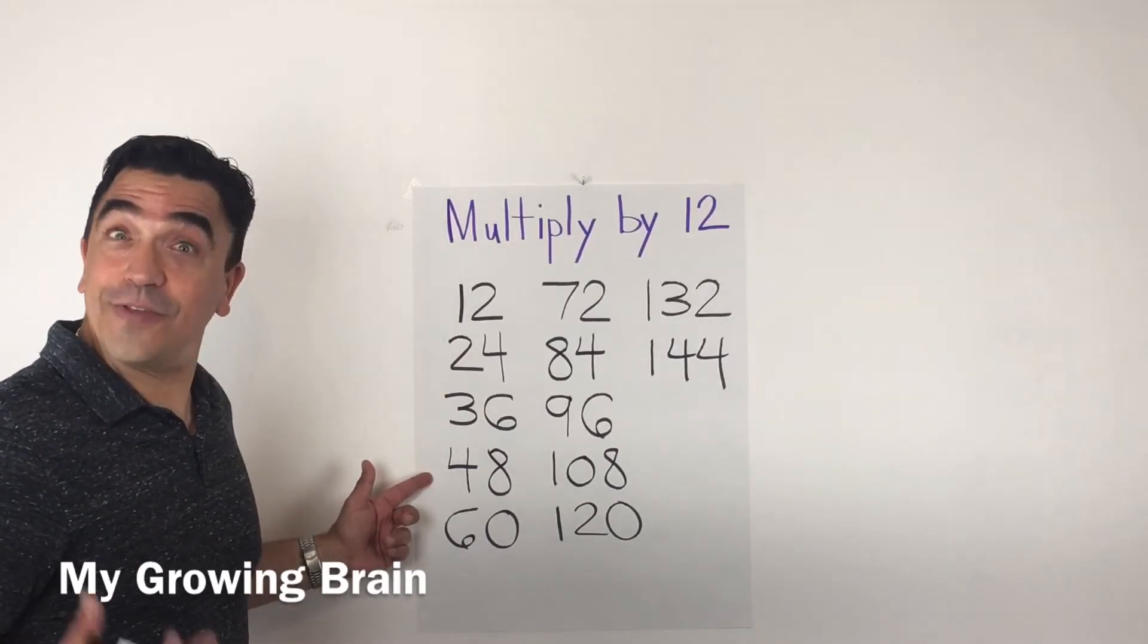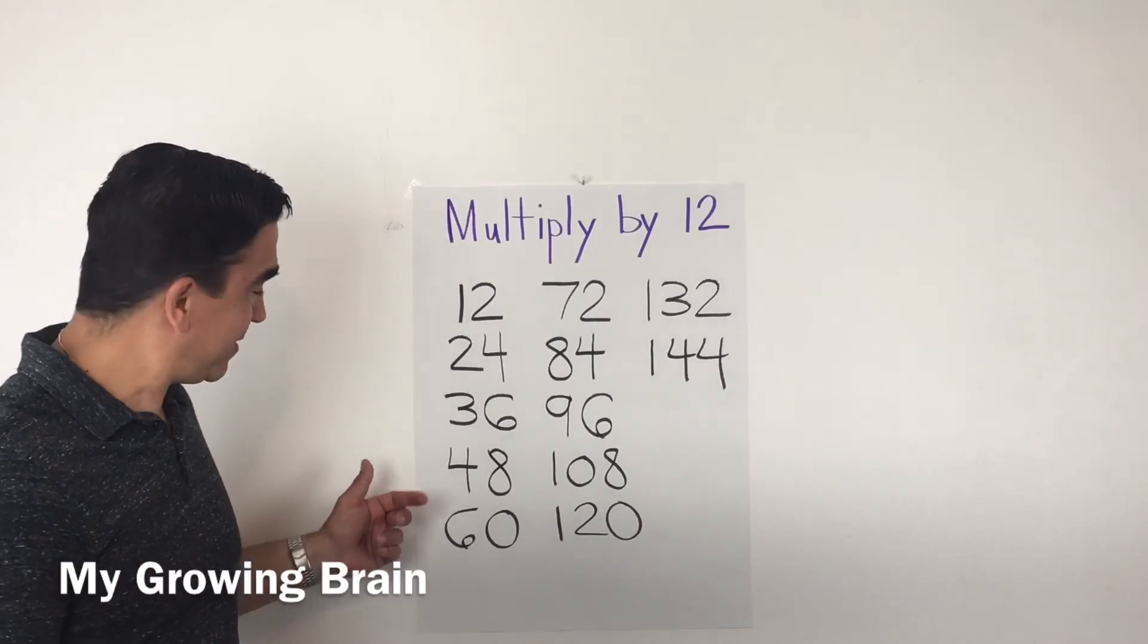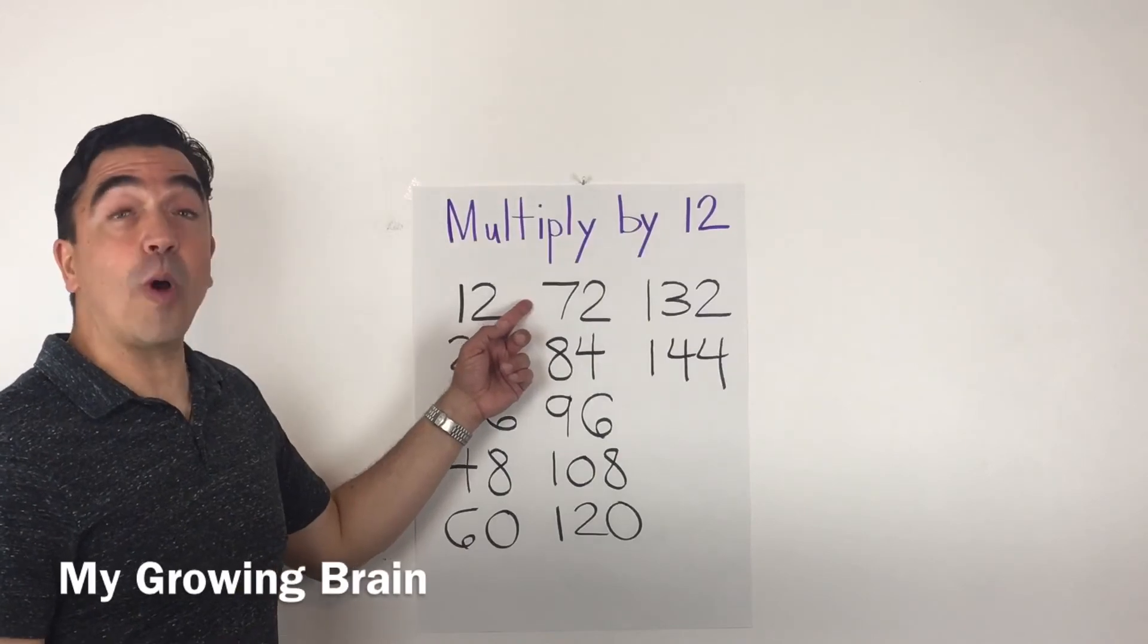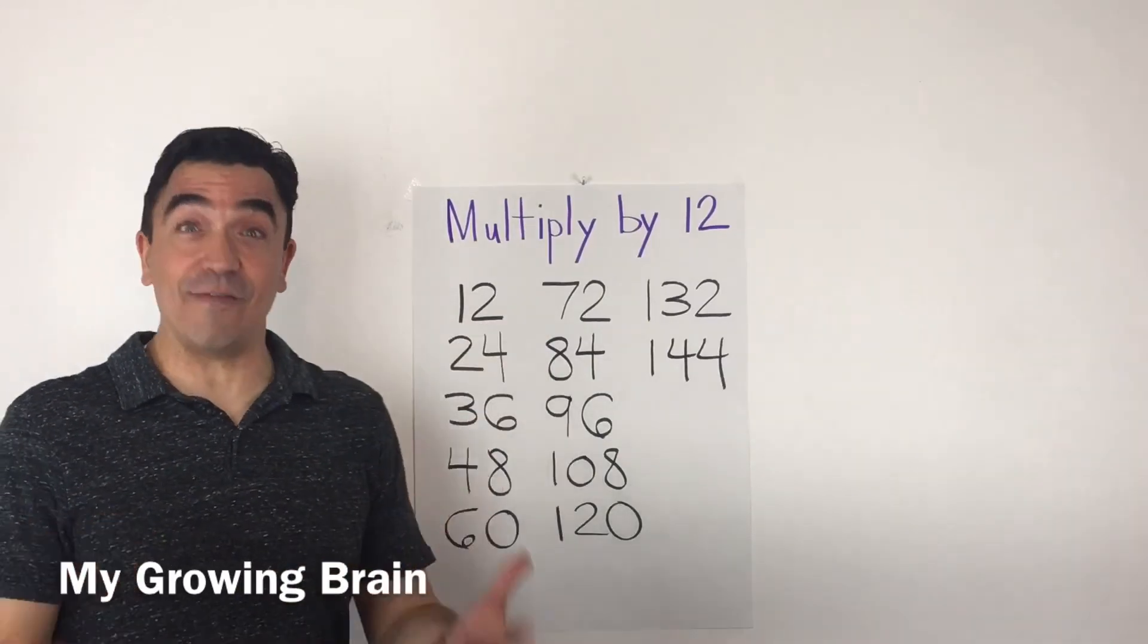12 times 4 is 48. 12 times 5 is 60. 12 times 6 is 72.